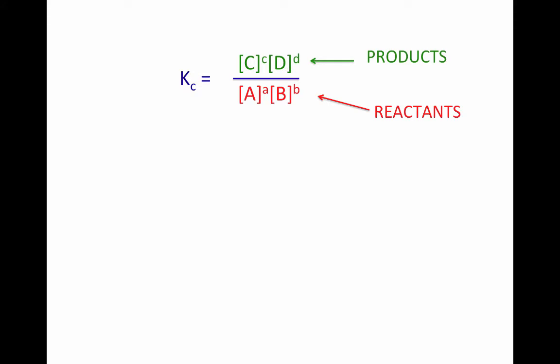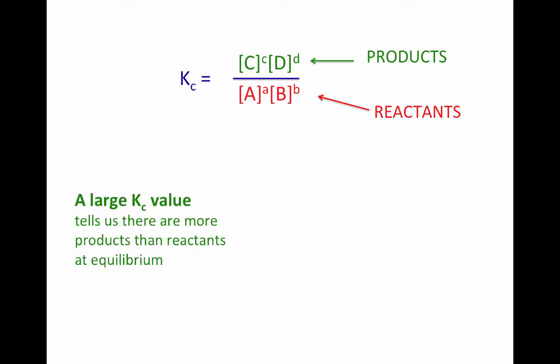If we have a lot of products at equilibrium, we're going to have very large concentrations for our products in the numerator of our fraction, and we will end up with fewer reactants, so we'll have small concentrations in the denominator. If you have a big number on top of your fraction and you're dividing it by a small number, you end up with a large number. So a large value for your equilibrium constant tells you that at equilibrium, you have more products than reactants.